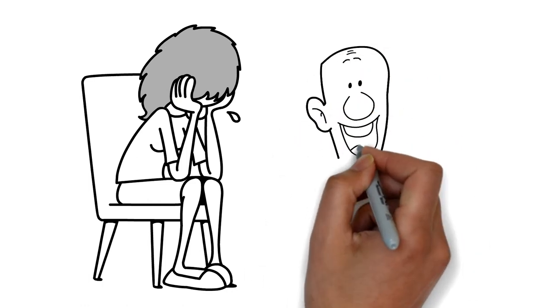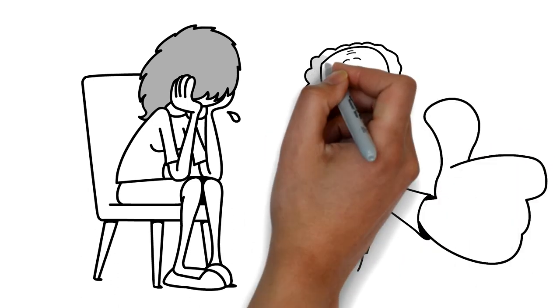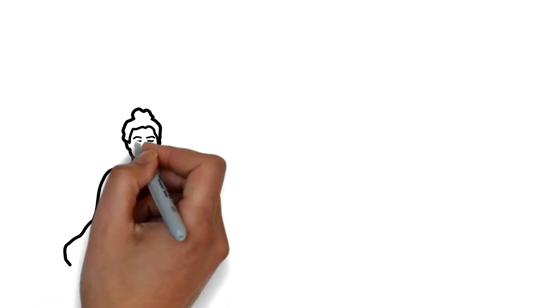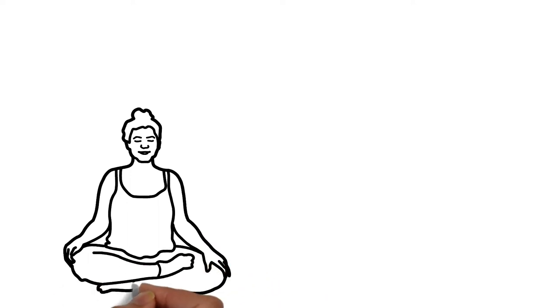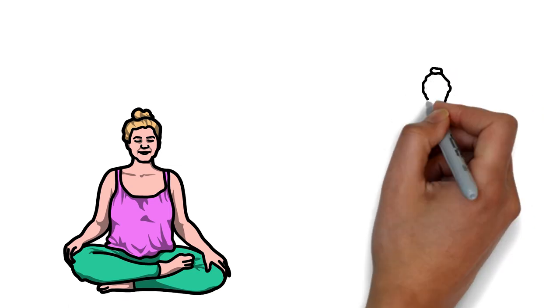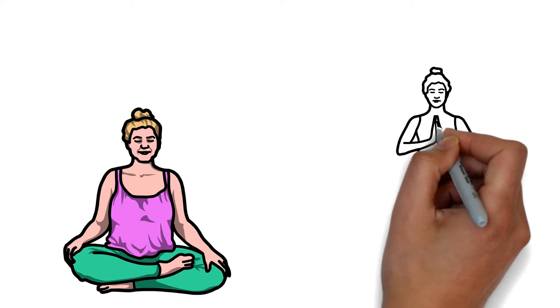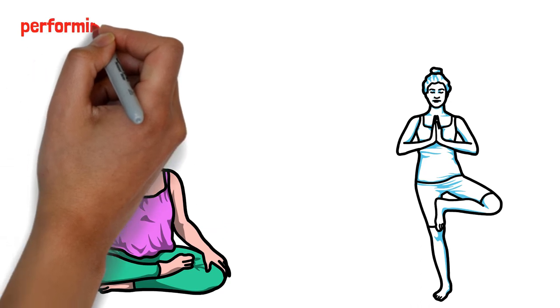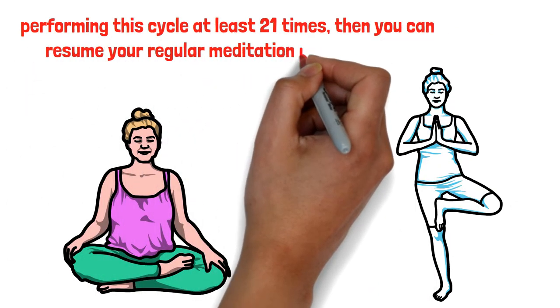Instead of comparing yourself to other people, you can work on building gratitude to obtain basic happiness. A very effective way to do this is to make gratitude a daily habit. You can start by including the following meditation exercises in your morning routine. After a few minutes of creating space while sitting comfortably and focusing on your breath, you can then think about this phrase, I'm satisfied with who I am, each time you inhale, and think, I'm content with what I have, as you exhale. After performing this cycle at least 21 times, then you can resume your regular meditation routine.